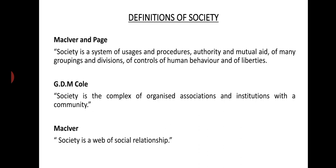MacIver and Page's definition also covers authority and mutual aid — the system of authority, which can be formal or informal, and the various systems of mutual aid between different human beings — and of many groupings and divisions based on different criteria. It also includes certain controls of human behavior through social sanctions, rules and regulations, which may be informal or formal, and also human liberties.